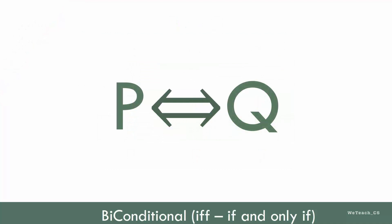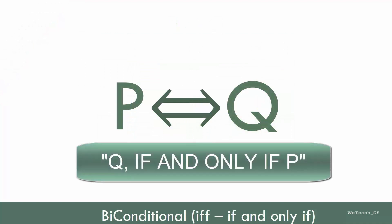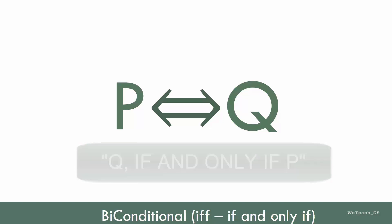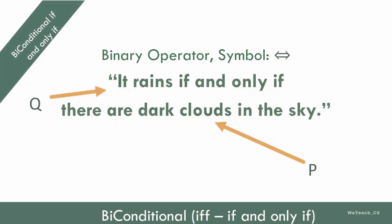This is a notation for a biconditional statement, which is read, Q if and only if P. Unlike an implication, which is considered a one-way situation, a biconditional is a two-way statement. If and only if is a phrase that is used, as you can see in the example here. For this situation, just as an implication, when P is true, Q is also true.